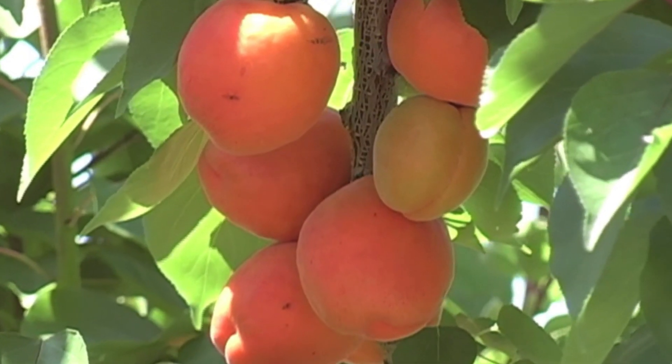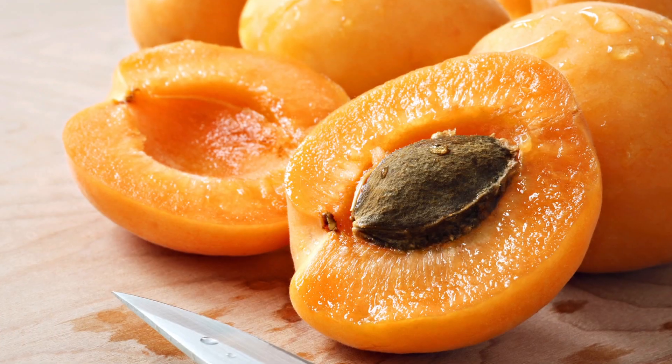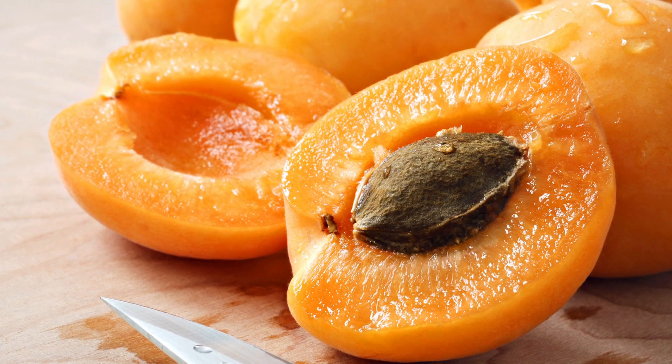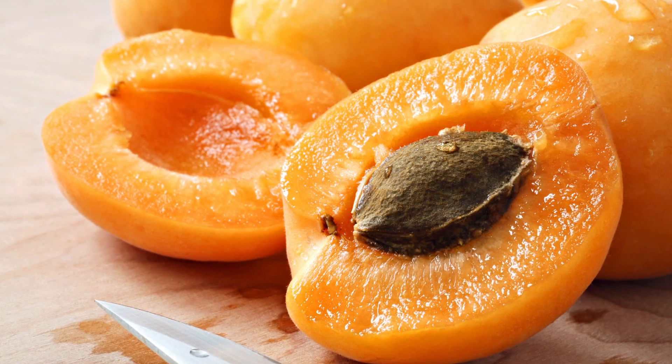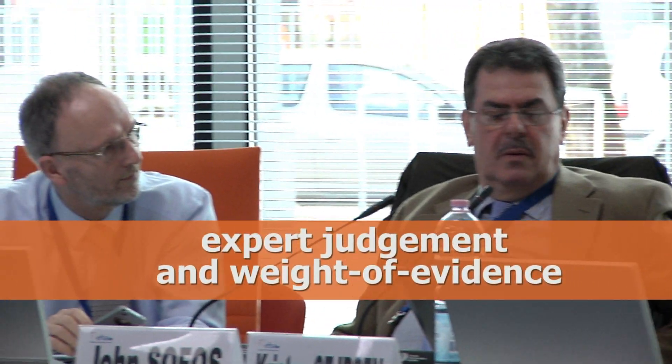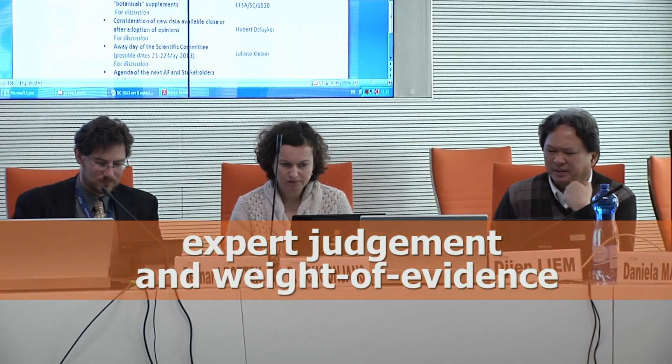A hazard is a possible threat related to the intrinsic properties of a substance. For example, amygdalin is a substance present in the stone of apricots. As a chemical, it is quite toxic and therefore a hazard. But because we do not eat the stone, the consumer is not exposed to it and therefore we consider that the risk to the consumer is low. We believe that scientists can clarify through expert judgement and the weight of evidence what is or is not an endocrine disruptor.